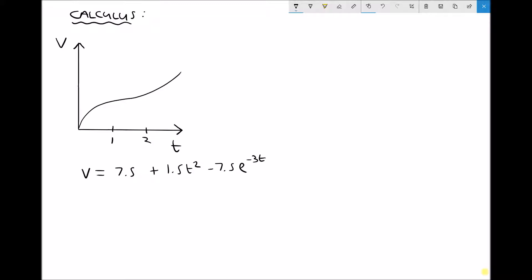We could, for example, differentiate the function and find the gradient of this graph at any point. And the gradient of the graph would represent dv by dt. Recall that gradients are normally calculated as change in y over change in x. But when we have a velocity time graph, the gradient represents dv by dt.